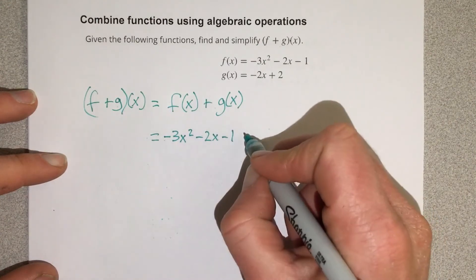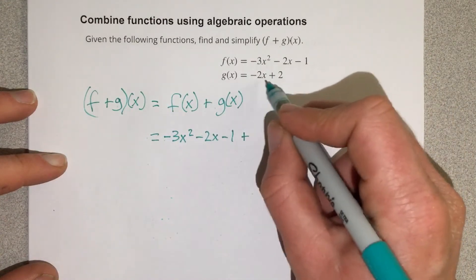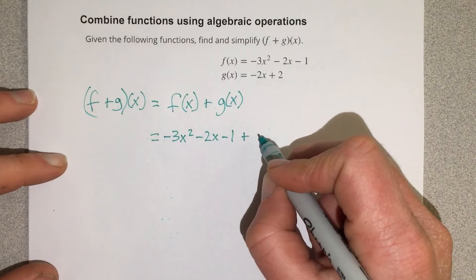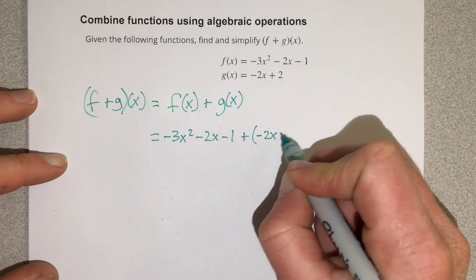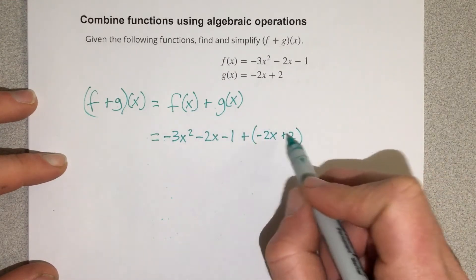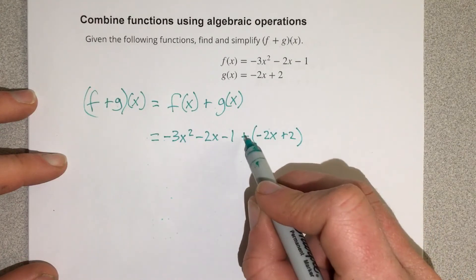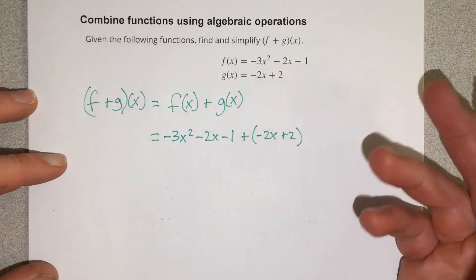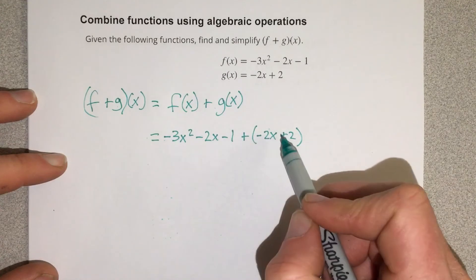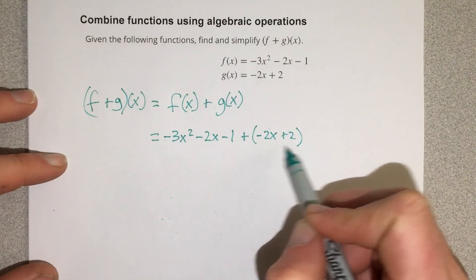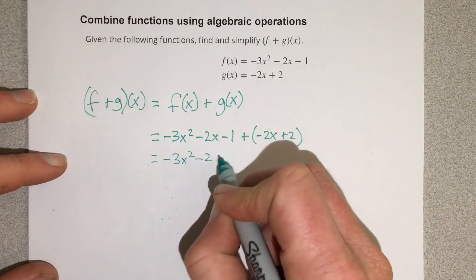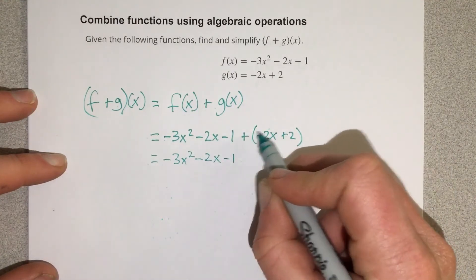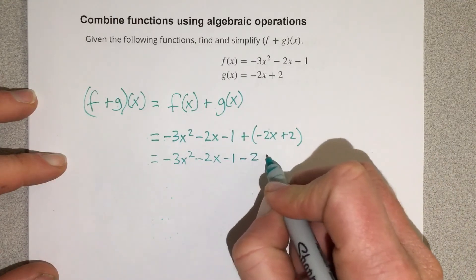I'm going to add the g of x function — I'll put it in parentheses — negative 2x plus 2. Only because we're adding in the whole function. That addition sign is not doing anything to the equation. If we distribute it, we don't change anything there. So we'll end up with negative 3x squared minus 2x minus 1. We distribute that addition sign and we just get minus 2x plus 2 still.